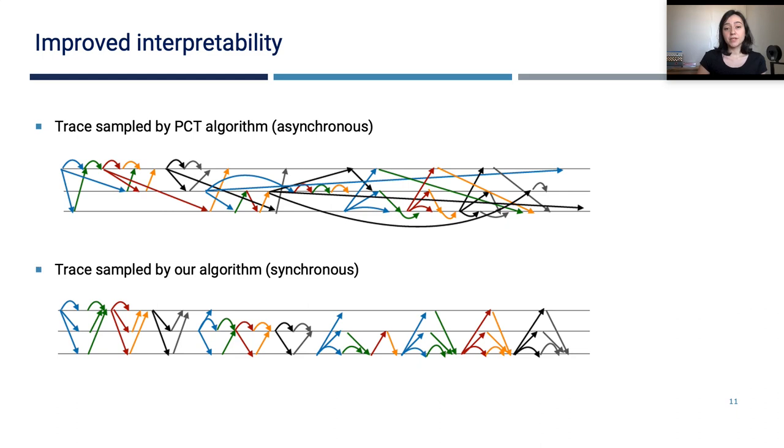Our testing algorithm comes with an advantage of improved interpretability of buggy traces, which is an important property as the ultimate goal of detecting bugs is actually to be able to understand them and then fix them. Here you see a trace sampled by PCT algorithm, which is an asynchronous trace. Now here it's not easy to see what's going on. We have to follow all these delayed messages, reorderings and so on. And here is the trace sampled by our algorithm, and you see that it's easier to see the faults and it's easier to reason about what can be going wrong in the execution.